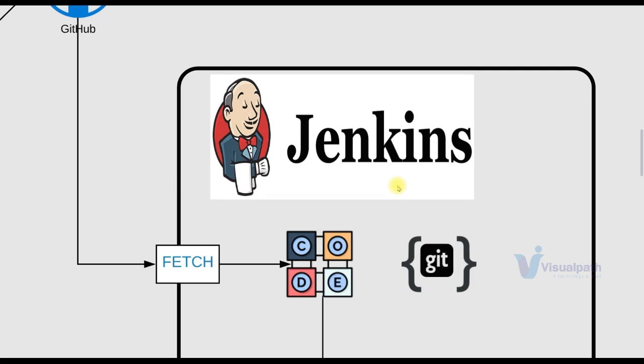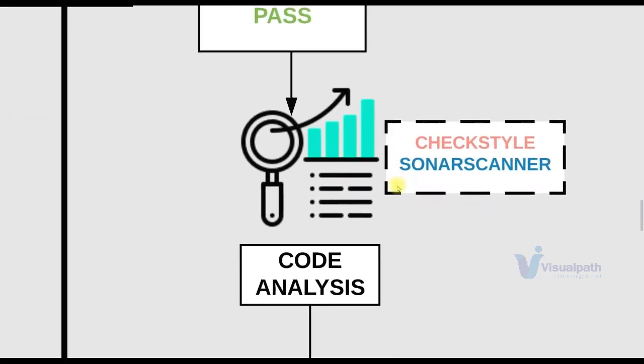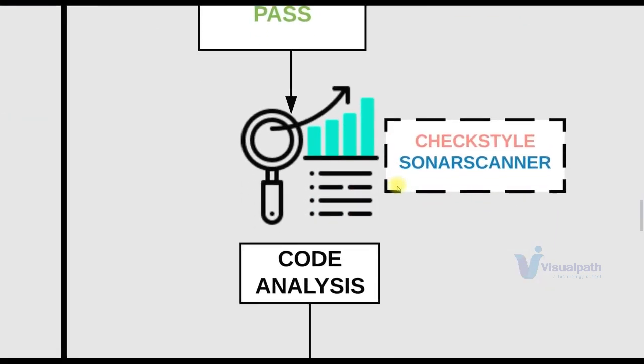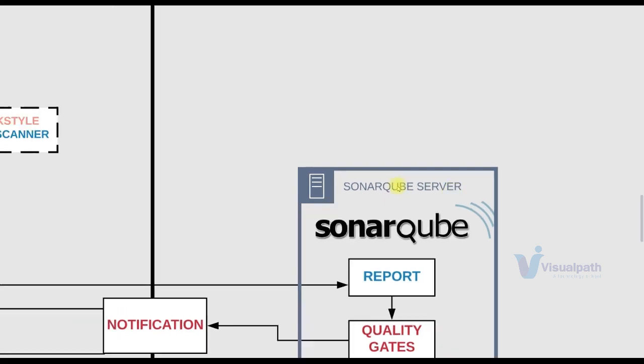Then Jenkins will run some code tests — unit tests basically, which are part of the build process. If there is any failure, a notification will be sent. If it passes, code analysis will be done on the code using CheckStyle and a SonarQube scanner. In this project we'll have multiple code analysis tools. It will generate a report, and this report we are going to publish on the SonarQube server. SonarQube server will display the result and will also have quality gates — a quality criteria. If you're passing the quality criteria, we can move to the next level; otherwise a failure notification will be sent and the process stops.